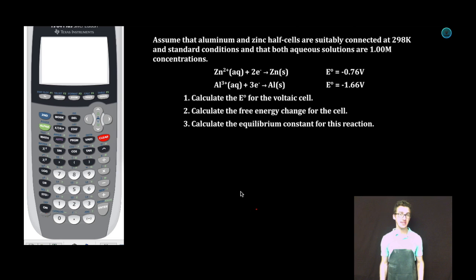We're asked to calculate the cell potential for the voltaic cell. We need to suitably connect to create a voltaic or spontaneous cell. As I look at my two reduction potentials, I have to decide which of them am I going to reverse to be oxidized. Remember, the more positive the reduction potential, the more likely it is to be reduced.